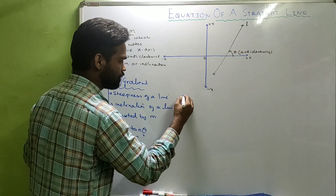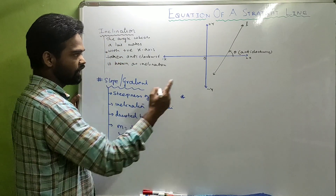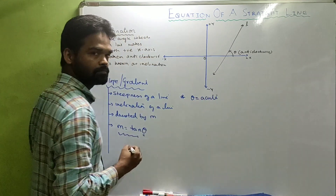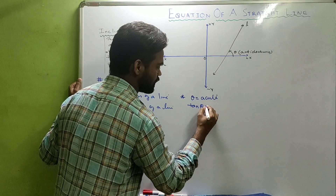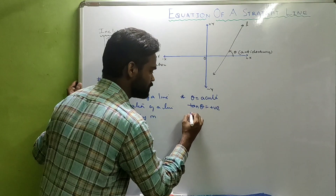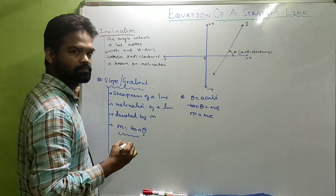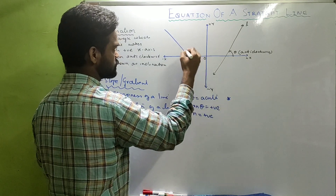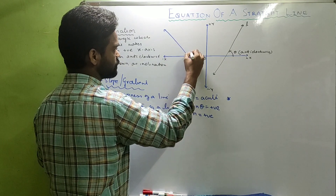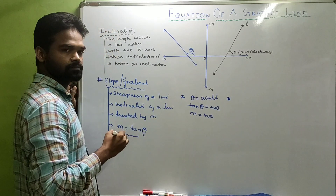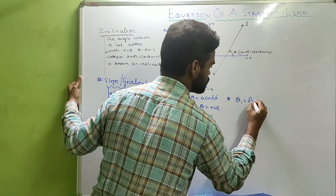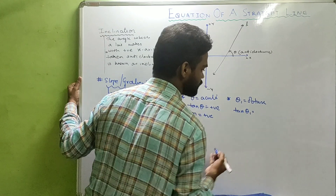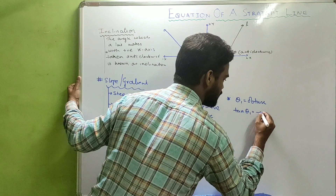A few things arise from this. If theta is acute, then tan theta will be positive, so the slope will be a positive number. But if I draw a line where the angle theta₁ is obtuse — more than 90° but less than 180° — then tan theta₁ will be a negative quantity, so M can be negative.